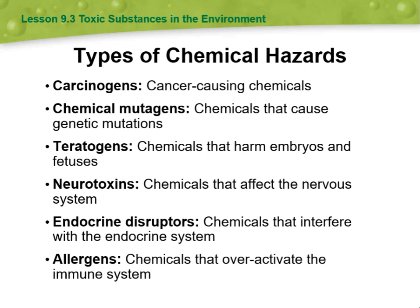Types of chemical hazards include carcinogens, which are cancer-causing chemicals; mutagens, which are chemicals that cause genetic mutation; and teratogens, which are chemicals that can harm embryos and fetuses. Neurotoxins are chemicals that affect the nervous system.